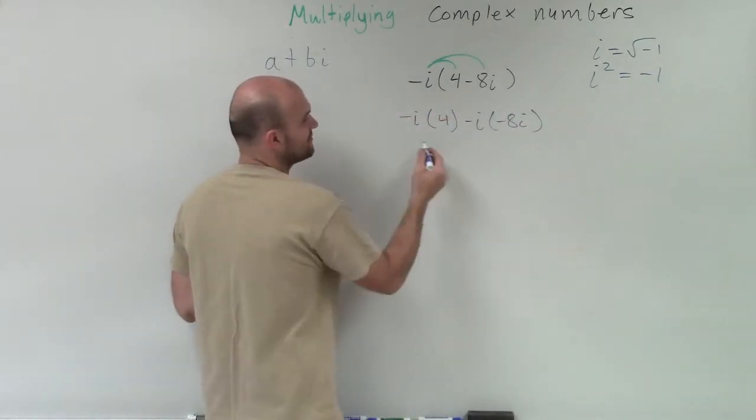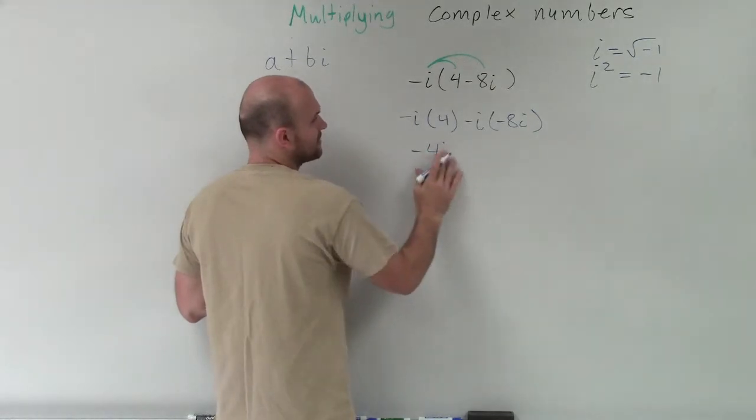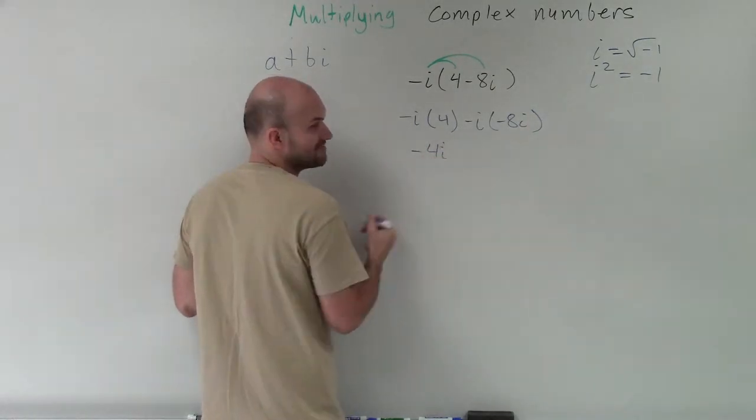Well, negative i times 4 is just going to be negative 4i. I know my squigglies on my i sometimes get a little crazy.